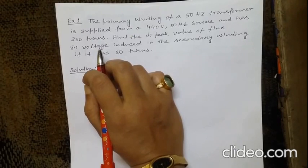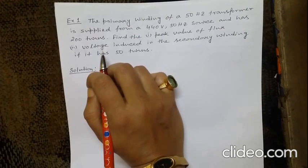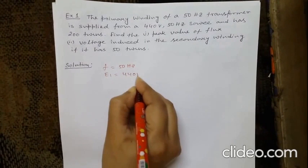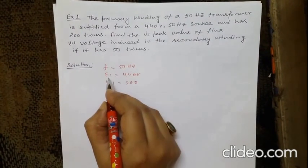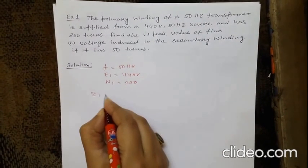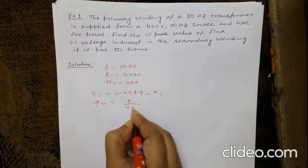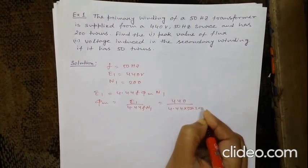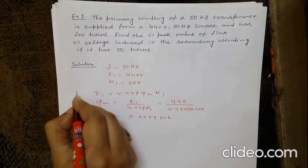Problem 1: The primary winding of a 50 Hz transformer is supplied from a 440 V, 50 Hz source and has 200 turns. Find (1) the peak value of the flux and (2) the voltage induced in the secondary winding if it has 50 turns. Given: f = 50 Hz, E1 = 440 V, N1 = 200. Since the induced EMF in the primary equals the applied voltage, E1 = 440 V. Using E1 = 4.44·f·Φm·N1, we get Φm = E1 / (4.44·f·N1) = 440 / (4.44 × 50 × 200) = 0.0099 Wb.